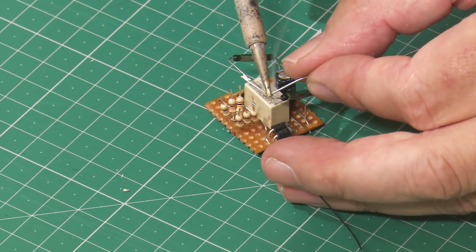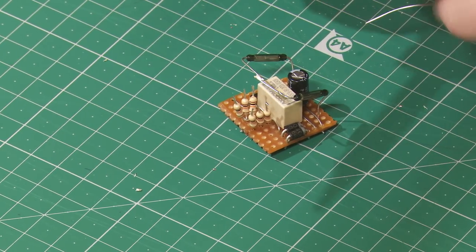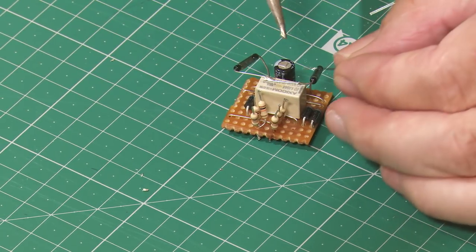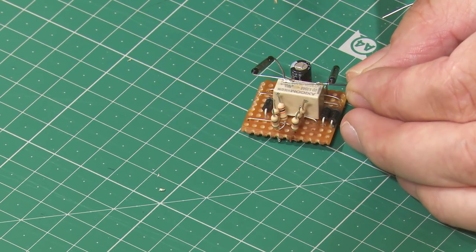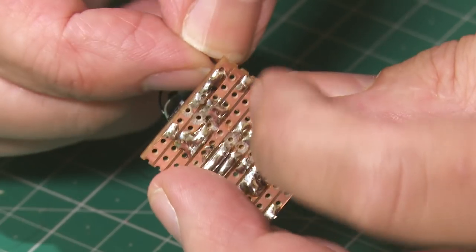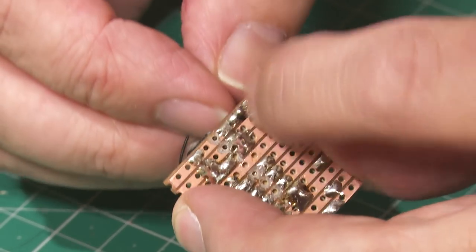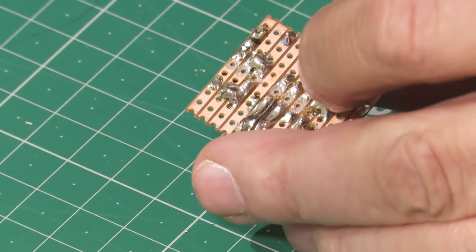Next a thin wire is soldered on the other side to the connecting legs of the reed switches. Back onto the circuit board.